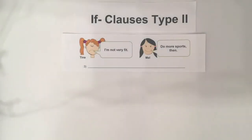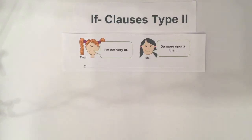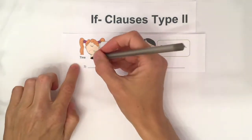Tina is sad because she's not very fit. Mel has got a solution for her — she says: 'Do more sports then.' So: If Tina did more sports, she would be fit.